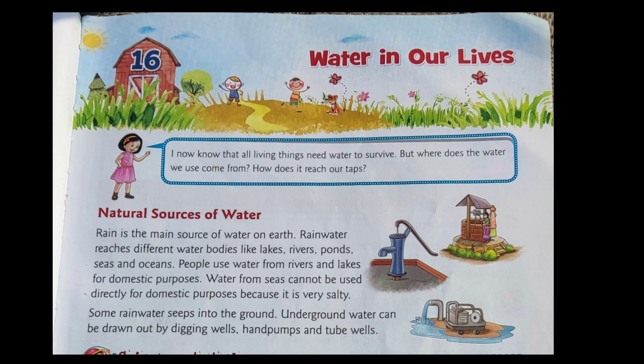Let us start with natural sources of water. Rain is the main source of water on earth. Rainwater reaches different water bodies like lakes, rivers, ponds, seas, and oceans. Natural sources of water are those which nature provides us, and the most important among them is rainwater.